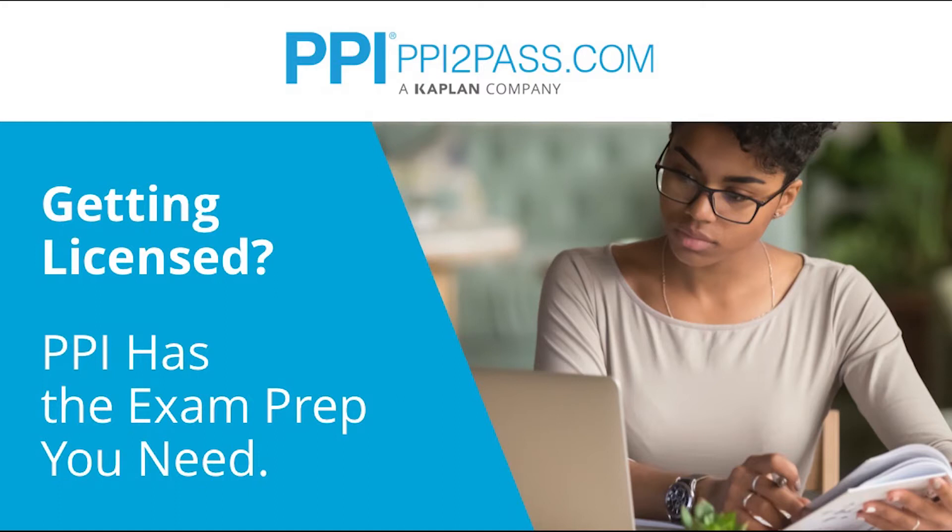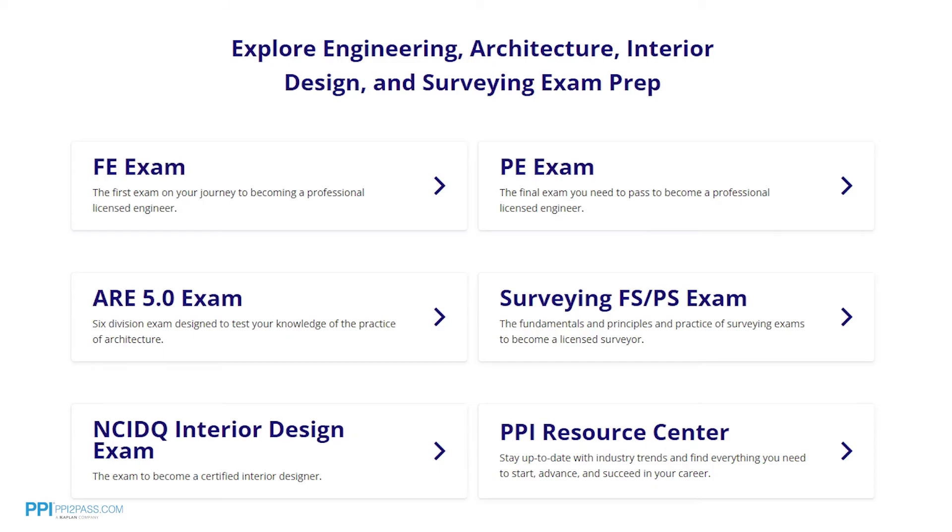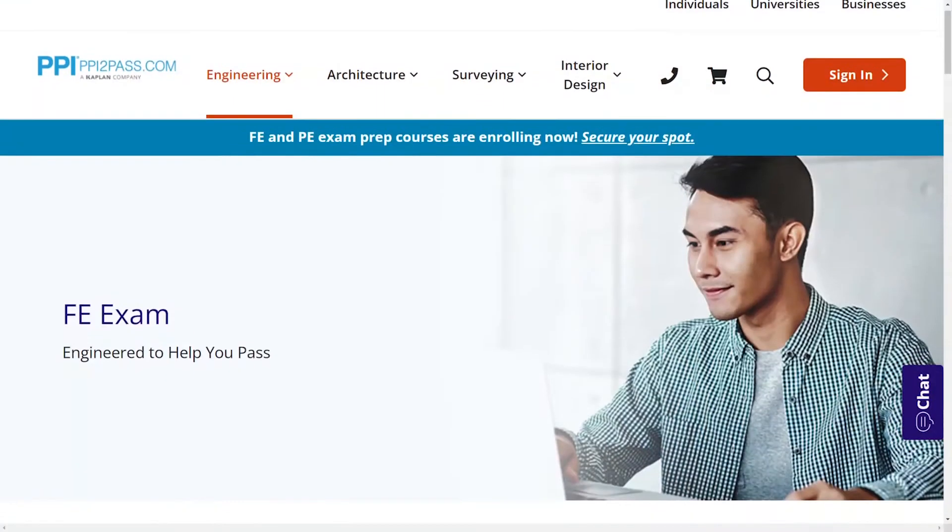PPI provides expert prep courses and study resources designed to help you pass the FE exam the first time. PPI's live online courses include hours of lectures, problem-solving demonstrations, exam strategy sessions, office hours, and a passing guarantee. When you take a live online course, PPI guarantees you will pass or you can take the on-demand course for free.